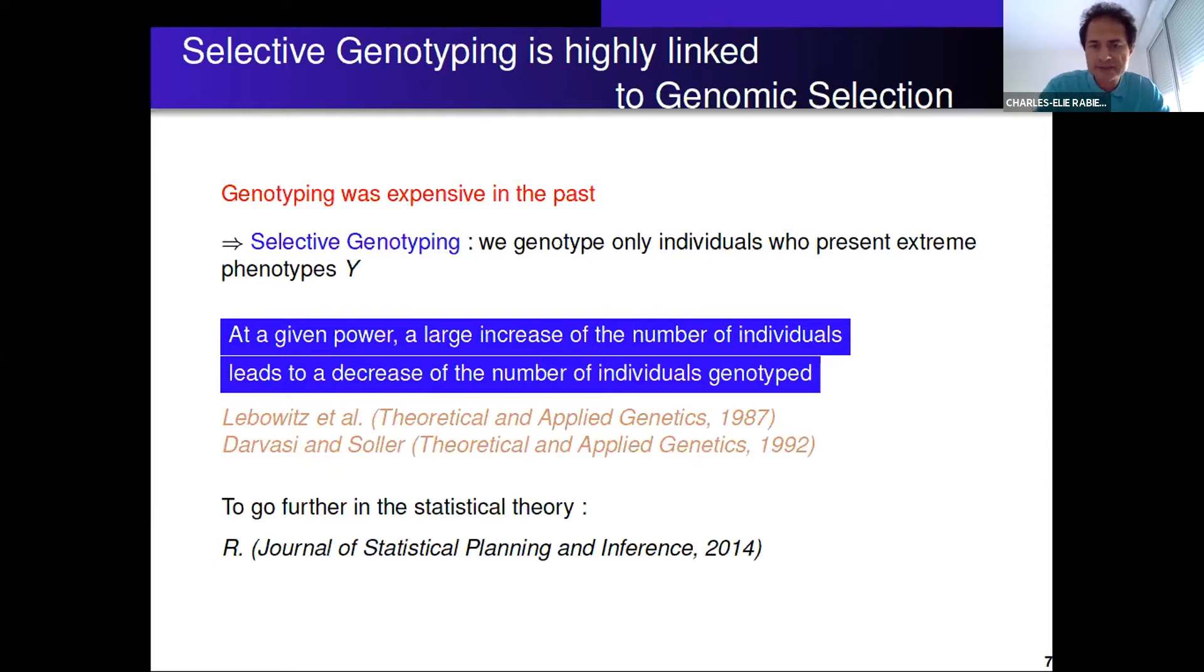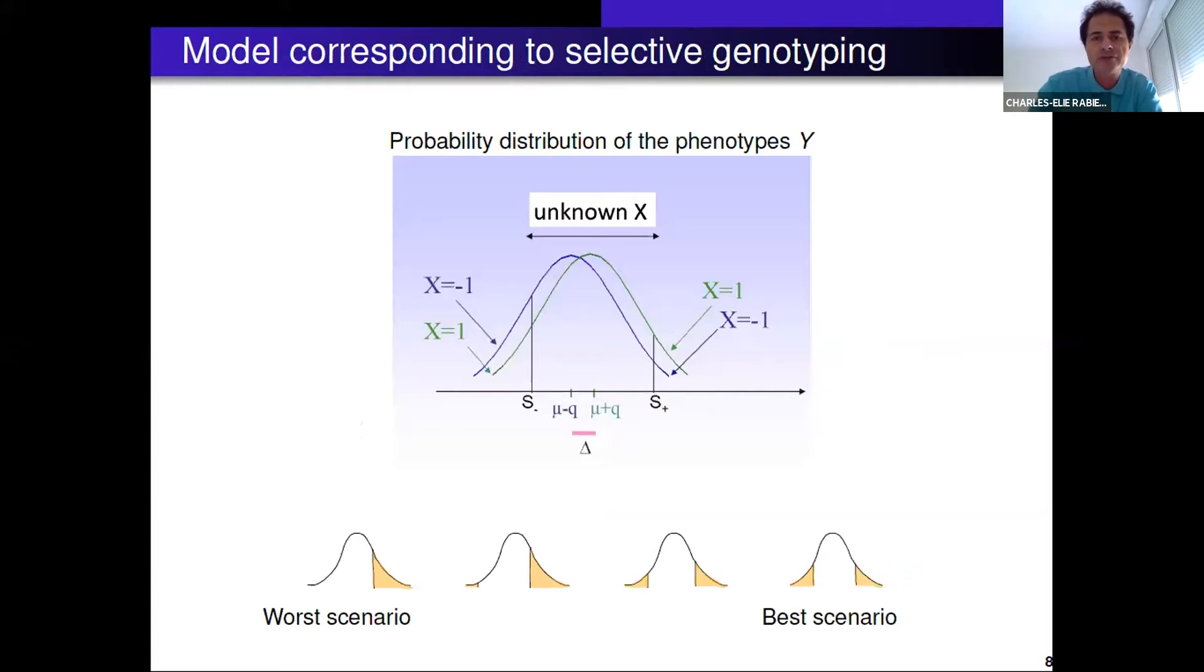Here is the selective genotyping model. You have two Gaussian distributions. Let's say we have two alleles, plus one or minus one, and your phenotype follows either the green curve or the blue curve. You genotype, so you have the information plus one or minus one, only if the phenotype is greater than the threshold S plus or lower than S minus. What has been shown is that under selective genotyping, the worst scenario is when you genotype only at one tail of the population, meaning when you put the threshold S minus to minus infinity. The best scenario is when you genotype at the two tails of the population. What you have to keep in mind is that the worst scenario of selective genotyping matches genomic selection because we select the best individuals.